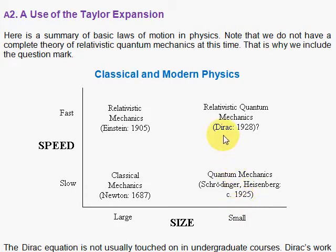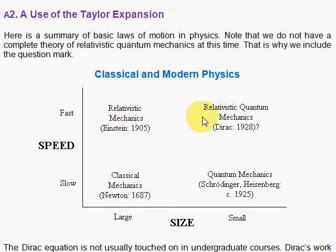Then Dirac in 1928 presented us with the first relativistic quantum mechanics theory — though we have a question mark here because this region is not complete. He took the two cornerstones of modern physics — special relativity and quantum mechanics — and presented a marriage of the two. From that marriage came relativistic quantum mechanics for the electron, and two of its children: the spin of the electron and antimatter. Very fascinating.